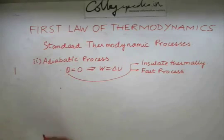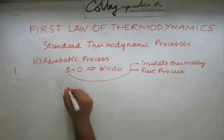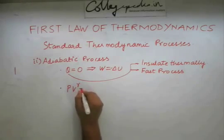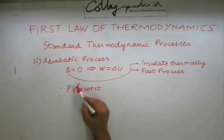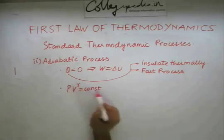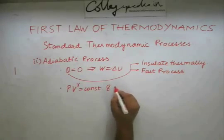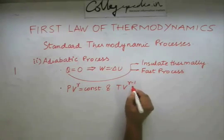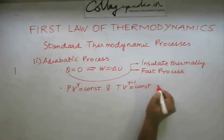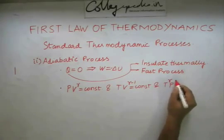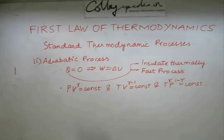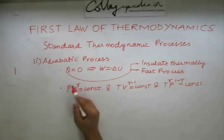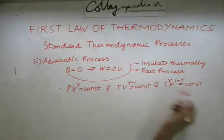Just as in the isothermal process, an adiabatic process follows the relation PV^γ = constant, where γ is the adiabatic constant — that is how it got its name. This is not the only relation: we can also write TV^(γ−1) = constant, and T^γ · P^(1−γ) = constant. These can be derived by replacing P with nRT/V or V with nRT/P in the first relation.